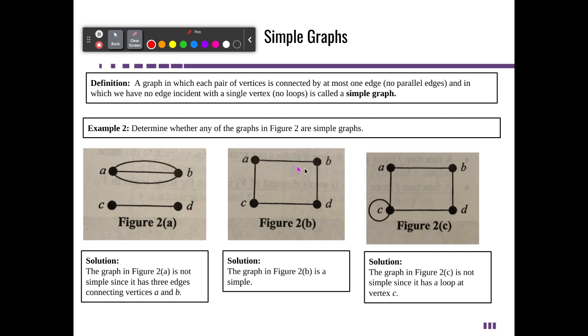One thing we need to remember is what a simple graph is. These algorithms only work with simple paths. We can't have parallel paths and we can't have loops. A simple path would just be like from C to D.